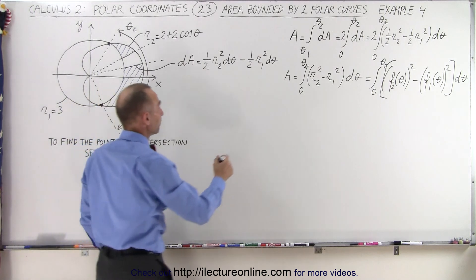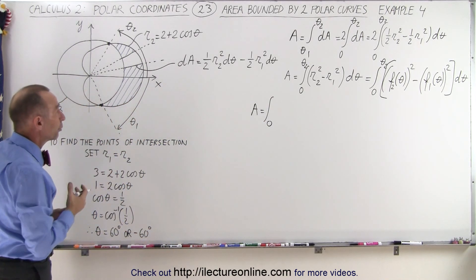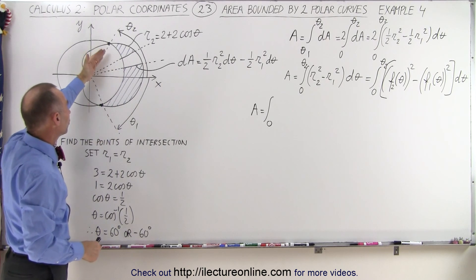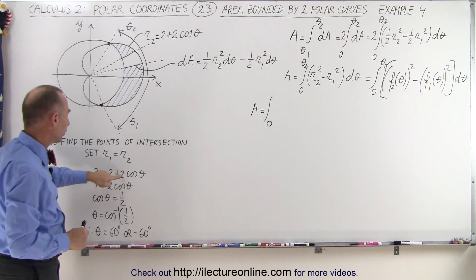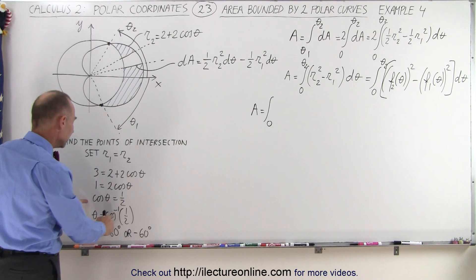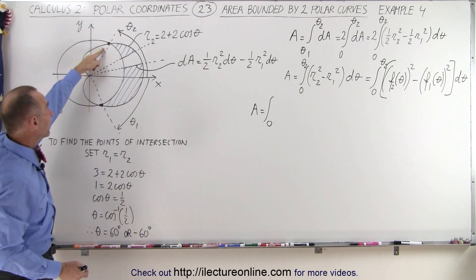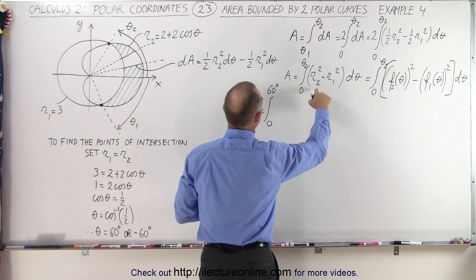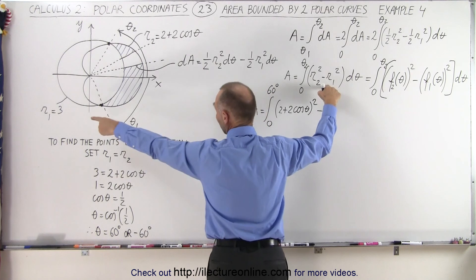The area is equal to the integral from 0 to θ2. The most difficult part of integrating polar functions like this is finding the limits of integration. To find θ2, we simultaneously solve the two functions by setting R1 equal to R2: 3 equals 2 plus 2 cosine θ. Subtracting 2 from both sides and solving gives cosine θ equals one-half, so θ is the inverse cosine of one-half, which is plus or minus 60 degrees. So we use 60 degrees as the upper limit, integrating from 0 to 60 degrees of (2 + 2cosθ)² minus 3², times dθ.